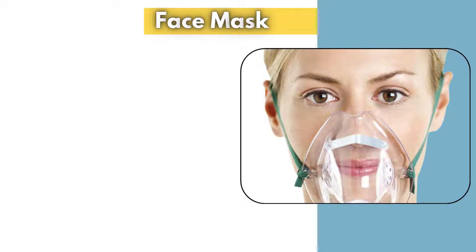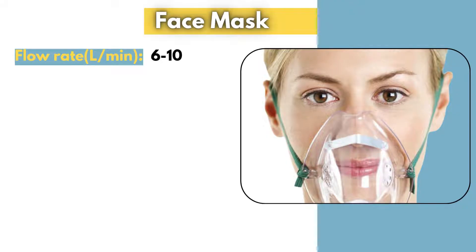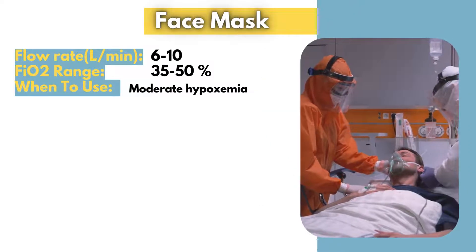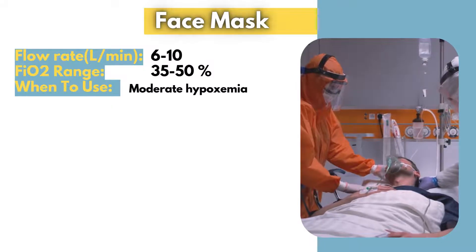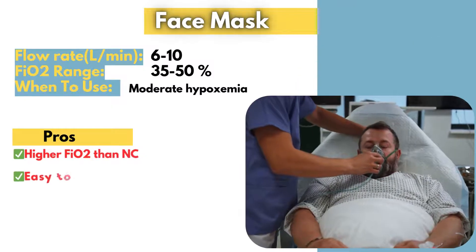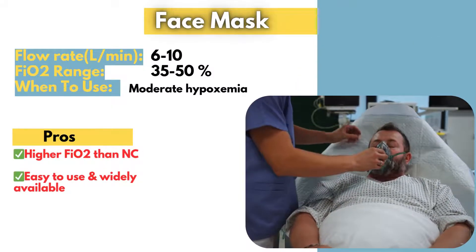The simple face mask is an upgrade from the nasal cannula, covering both the nose and mouth to deliver higher oxygen concentrations. It is commonly used when patients require more oxygen than a nasal cannula can provide, but do not yet need a more advanced delivery system. The flow rate for a simple face mask typically ranges from 6 to 10 liters per minute, delivering an approximate fraction of inspired oxygen between 35 and 50 percent. This mask is often used in patients who need moderate oxygen support. It is easy to use and widely available, making it a convenient option in hospital settings.